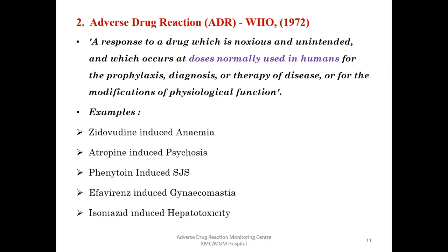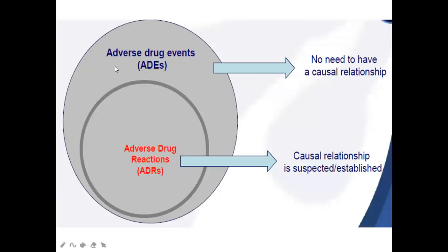To clarify the distinction: adverse drug events do not require a causal relationship — for example, chlorpheniramine causing drowsiness leading to an accident. Adverse drug reactions do have a suspected or established causal relationship with the drug. Adverse drug events may involve extended or side effects of drugs that may not be classified as adverse drug reactions.